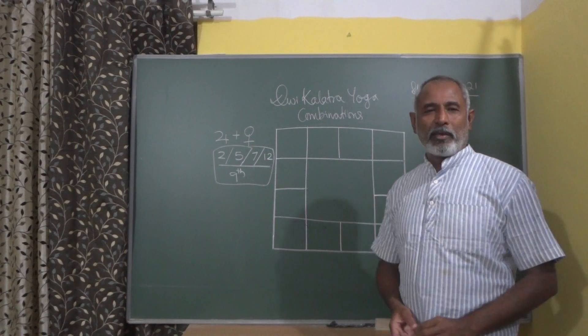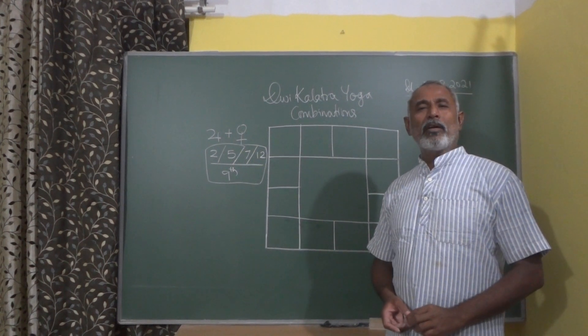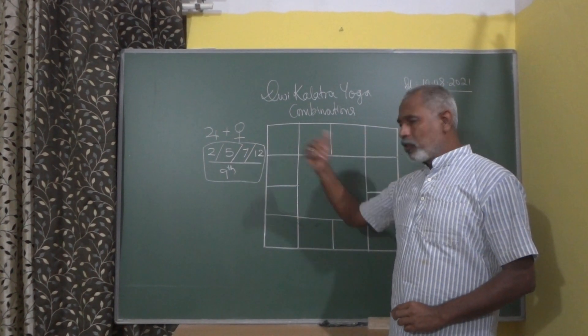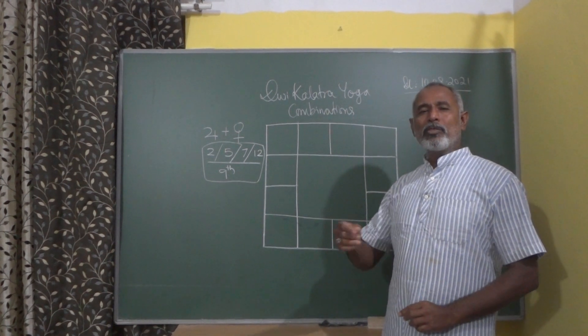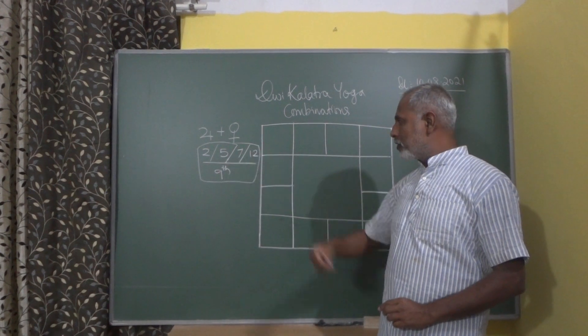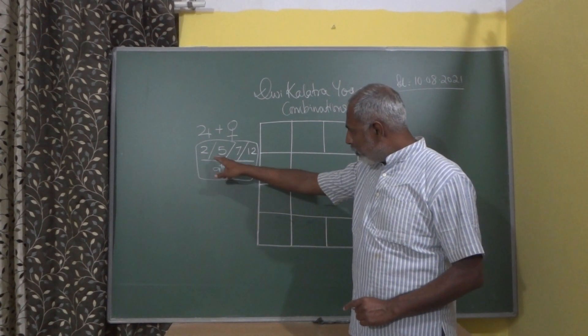Good evening, this is Shesha Chalam from Astral Guide Mysore. Today we are going into the subject of Dvikalatra Yoga and its combinations. I have written on the board one most important combination that is of Jupiter and Venus.